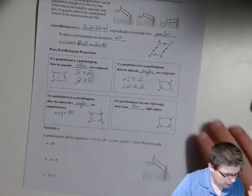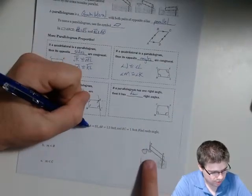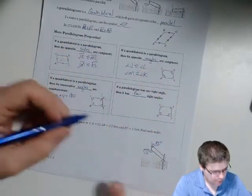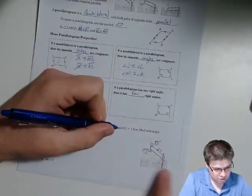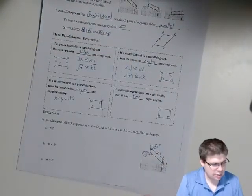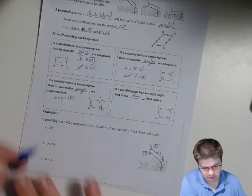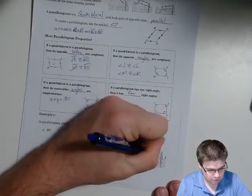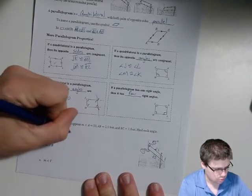Example one: in parallelogram ABCD, the measure of angle A is 55 degrees, the measure of segment AB is 2.5, and the measure of BC is one foot. DC is a side opposite that 2.5, so it's also going to be 2.5. DC is going to be equal to AB, which is 2.5.